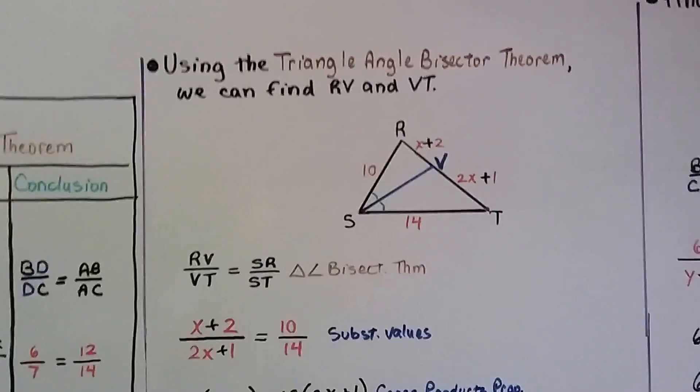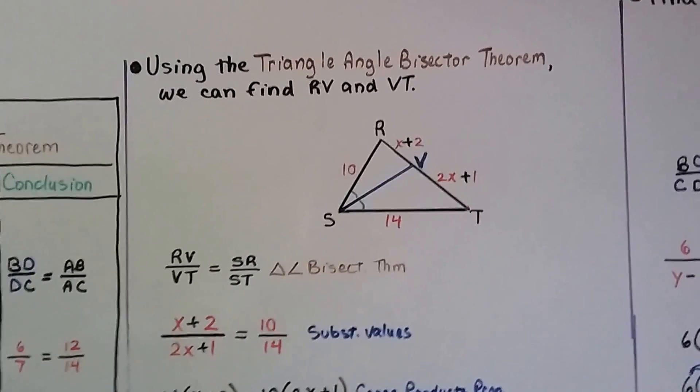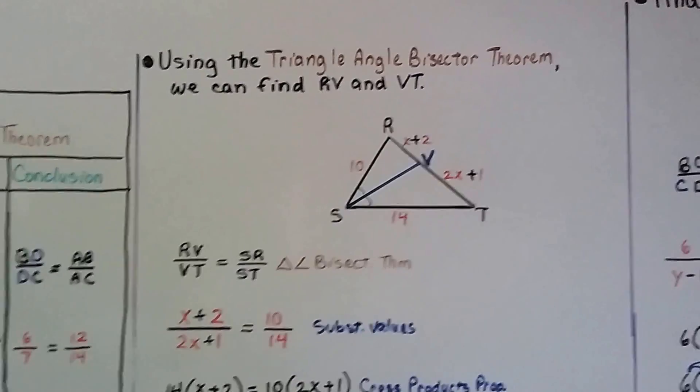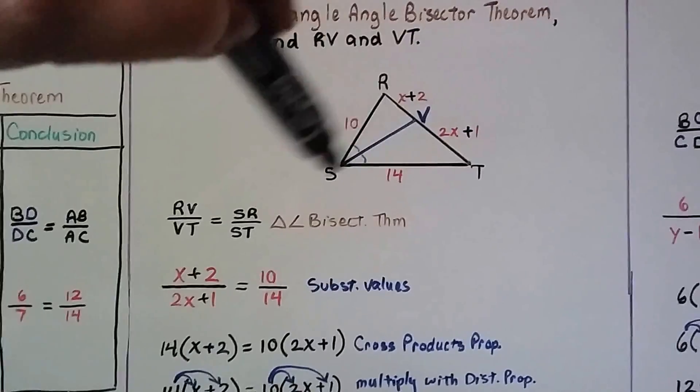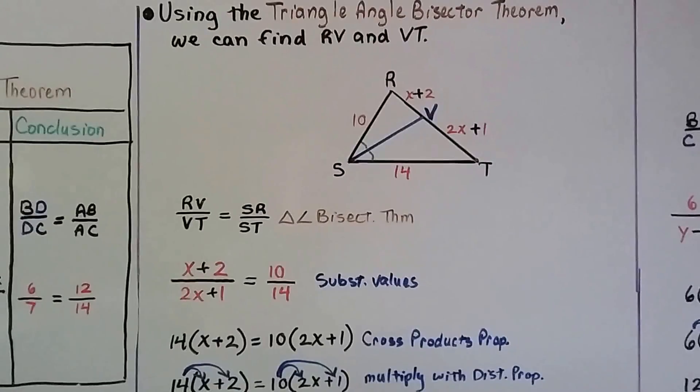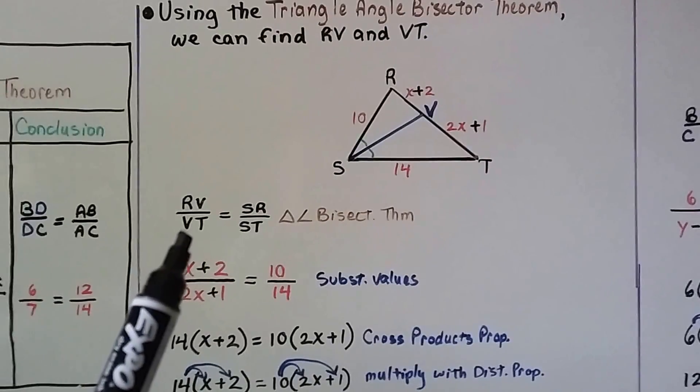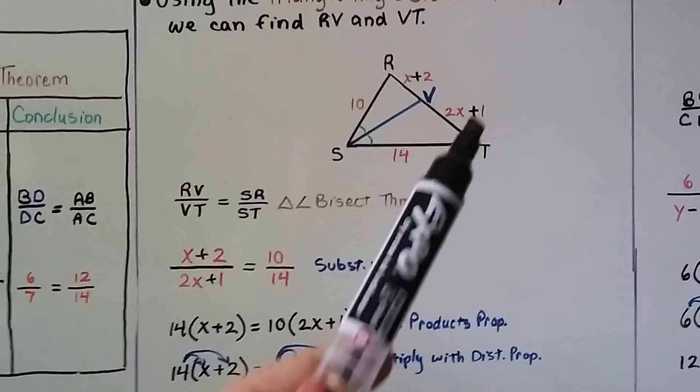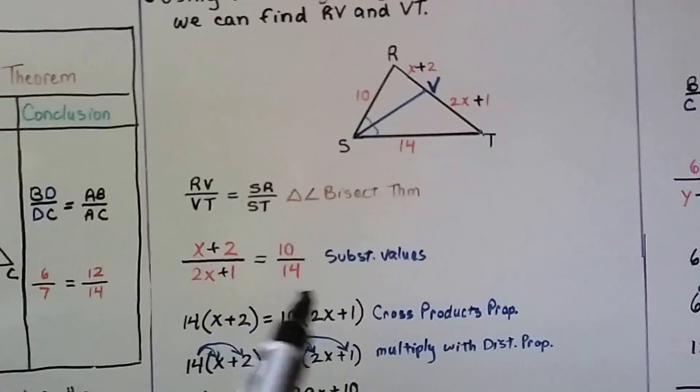Using the triangle angle bisector theorem, we can find RV and VT. RV is x plus 2 and VT is 2x plus 1. SV is our angle bisector. We can see that angle is congruent to that one. And using the triangle angle bisector theorem, we can write a proportion. We've got RV over VT is equal to SR over ST.